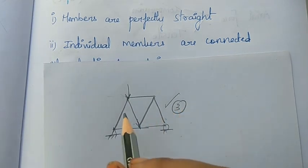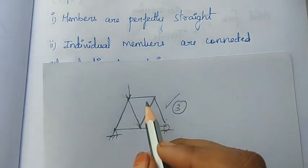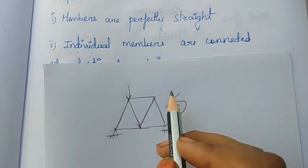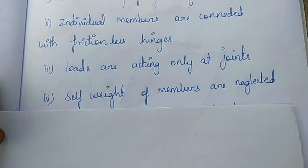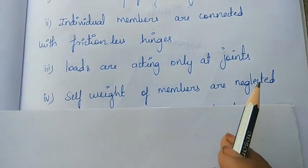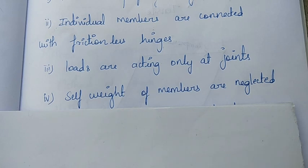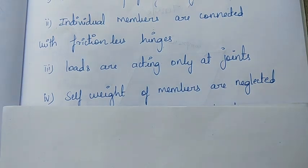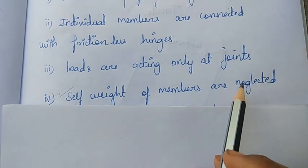To summarize so far: all members have frictionless hinges, members are straight. We have three assumptions so far. The fourth assumption: the self-weight of members is neglected. When we analyze, we don't add stress from a member's own weight, so self-weight is neglected.